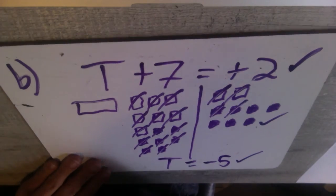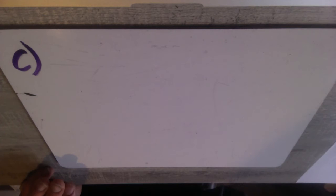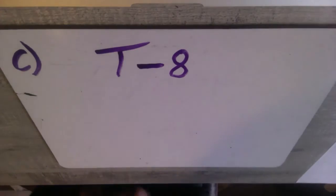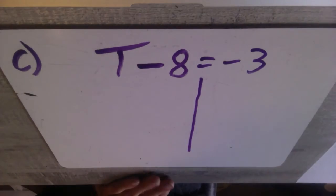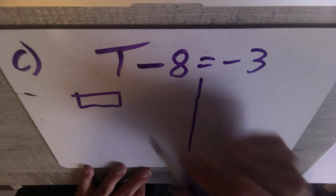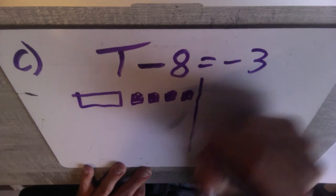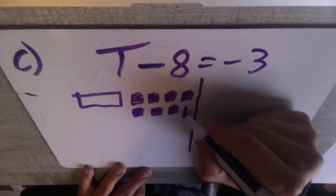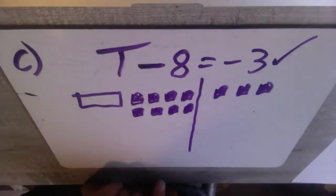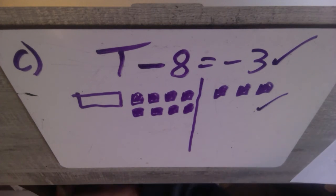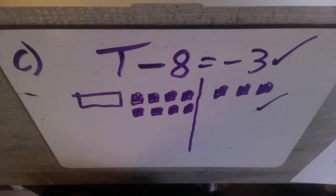Moving on to the last question, three C. Overnight the temperature dropped eight degrees, so minus eight. We'll show temperature with T, and it dropped eight degrees to the new temperature negative three. Show that line to separate both sides. Our variable T with negative eight tiles on the left side. On the right side I've got negative three tiles. We've got our equation — one mark. We've got our tiles shown — there's your other mark.